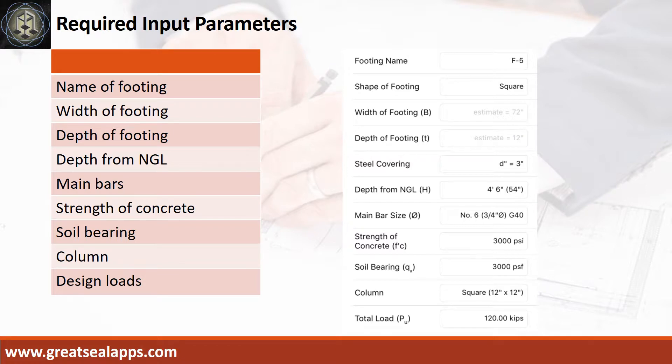Enumerate input parameters required: Footing name, F5. Shape of footing, square. Depth of footing, 12 inches. Depth from natural grade line, 4 feet 6 inches. Main bars, 3/4 inch diameter at grade 40. Strength of concrete, 3000 psi. Soil bearing capacity, 3000 PSF. Column, 12 inches by 12 inches square. And total load, 120 kips.